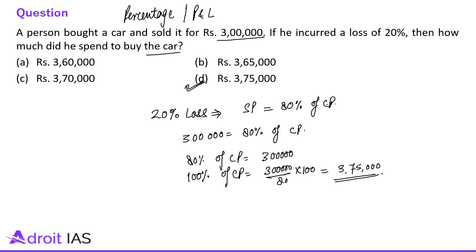For an experienced person this question takes just 4 to 5 seconds — you can solve it while reading. For most students it should take around 30 to 40 seconds maximum, including reading and solving. Again, a very simple question belonging to percentage or profit and loss.